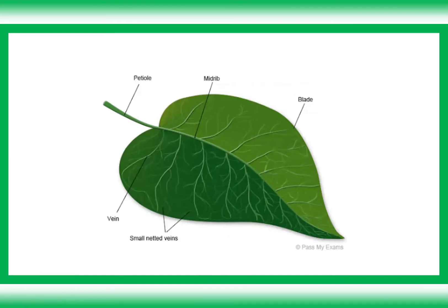Now let's discuss the external structure of a leaf. Here we have a leaf with its different parts. The petiole is also known as the leaf stalk. When the petiole continues into the leaf blade, the thin whole section is known as the leaf blade or lamina. Where the petiole continues into the leaf blade, it is called the midrib or main vein. Branching out from the midrib we have branching or netted veins, and these branch even further into small netted veins.